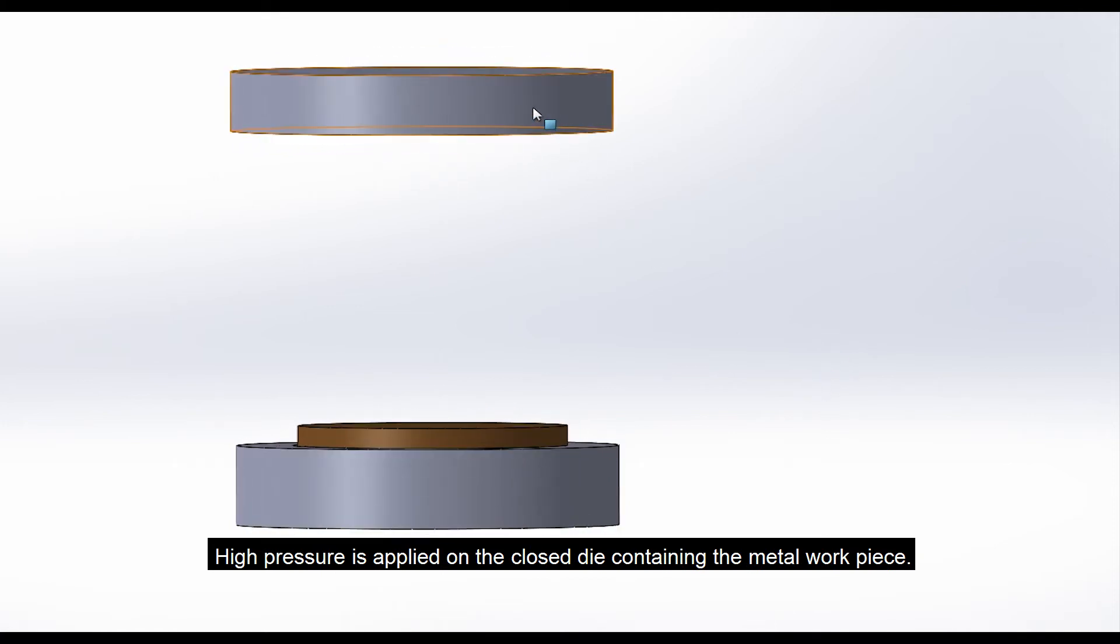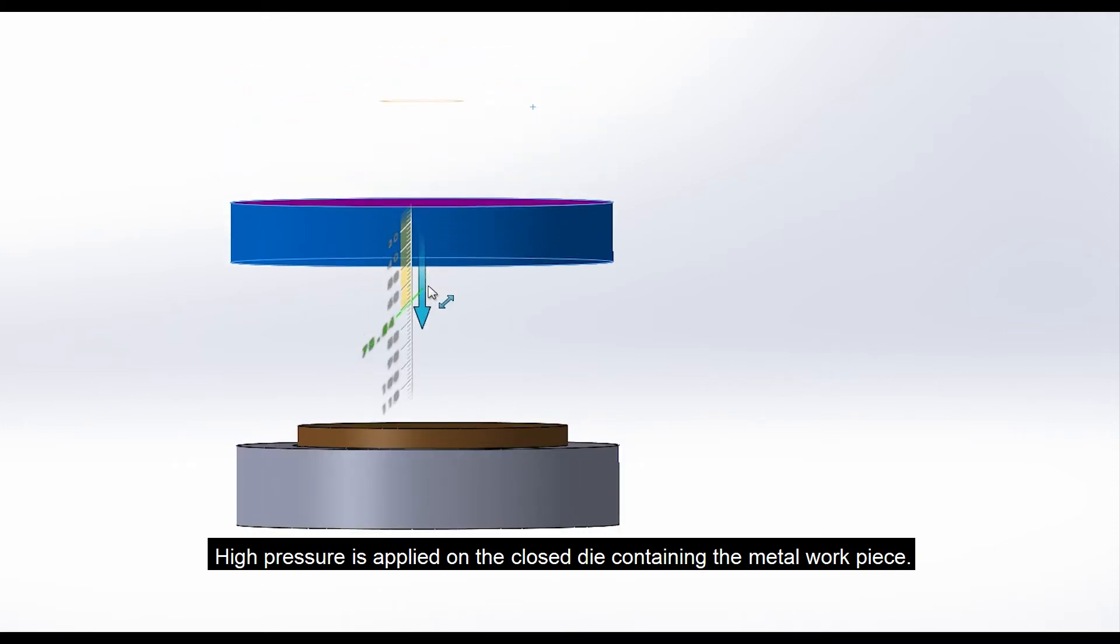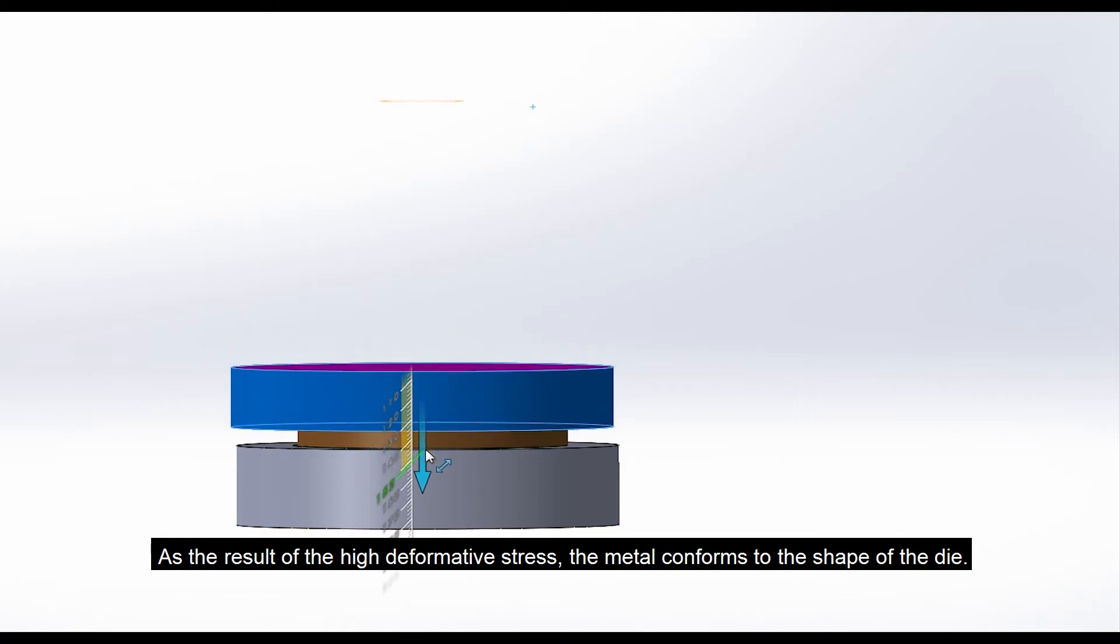High pressure is applied on the closed die containing the metal workpiece. As a result of the high deformative stress, the metal conforms to the shape of the die.